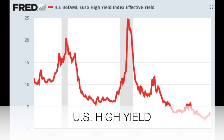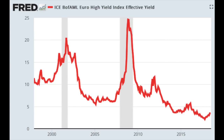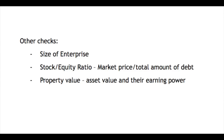The poorest year today was 2008-2009 when interest rates spiked and a lot of companies had trouble refinancing. Other checks are size of the enterprise — smaller companies have more trouble paying back debt and refinancing because those business models are less tested and might change in the next recession. Also the stock to equity ratio, where Graham discusses market price to total amount of debt. Market price could change, and property value — as a value investor, Graham focuses on the value of assets and their earning power.